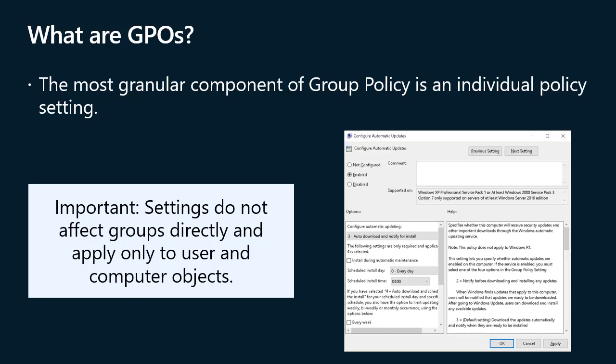To define a policy setting, in the Group Policy Management Editor, locate the policy setting and then select Enter. The policy setting properties dialog box appears. Change the policy state to enabled or disabled. Most policy settings can have three states: not configured, enabled, and disabled. If required, configure additional values, and when complete, select OK. In a new GPO, every policy setting defaults to not configured.